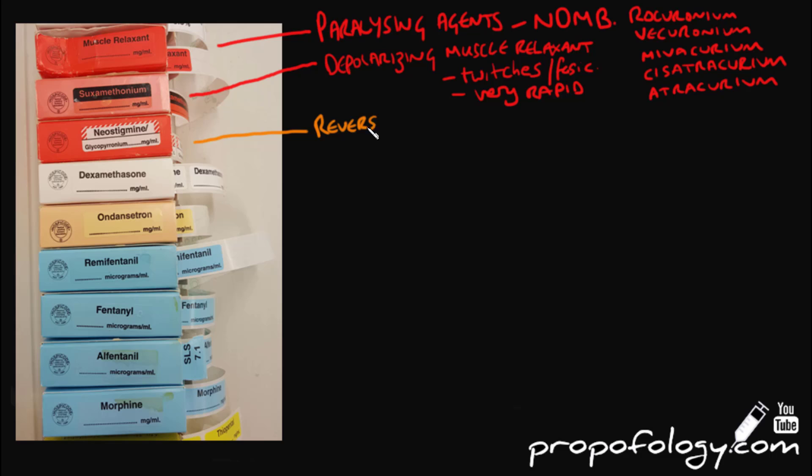Neostigmine, often combined with glycopyrrolate, is a reversal agent that increases acetylcholine at the neuromuscular junction. The glycopyrrolate is added as it increases the heart rate because neostigmine decreases the heart rate, so they offset each other.